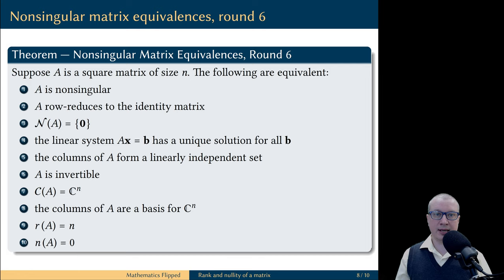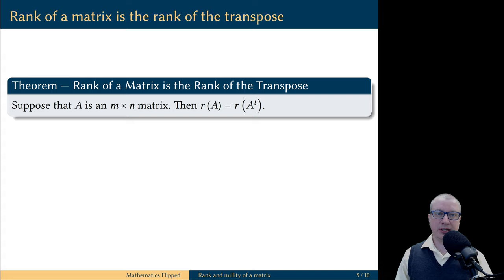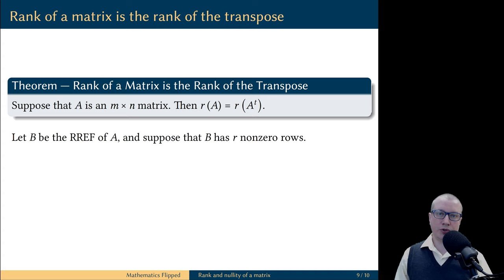Next, let's observe that taking the transpose does not change the rank of the matrix. For a given matrix A, we find its reduced row echelon form B, and let's say it has R non-zero rows.